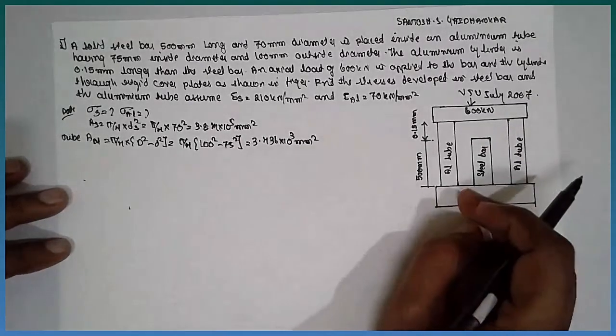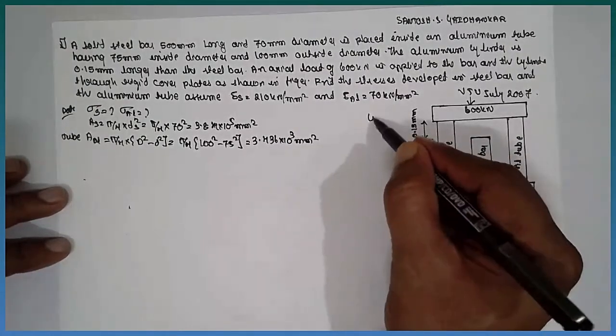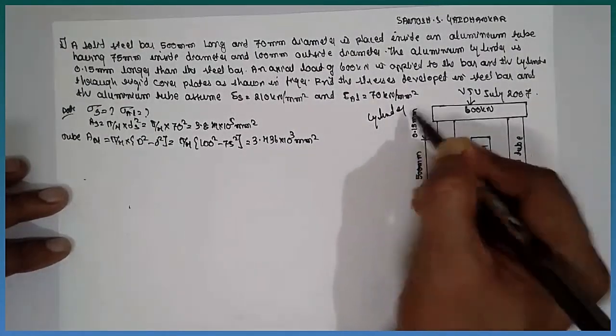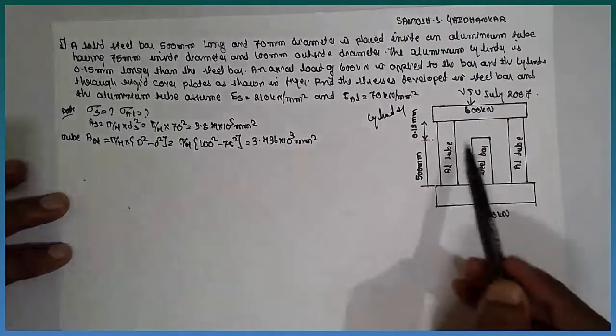Therefore, in case of free body diagram, do not multiply it. It is a tube, not the solid section. This is the cylindrical part.